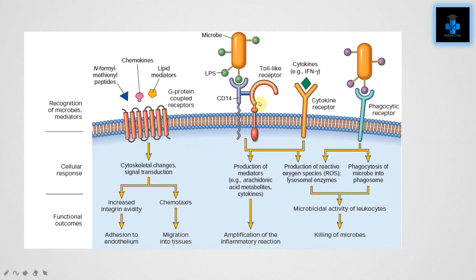The Toll-like receptor recognizes the lipopolysaccharide unit of the microbe. It results in amplification and killing — specifically, they produce mediators such as arachidonic acid metabolites and cytokines, resulting in amplification of the inflammatory reaction. They also produce reactive oxygen species and lysosomal enzymes, which end up killing the microbes. Likewise, the phagocytic receptor produces reactive oxygen species, kills microbes, and performs phagocytosis of the microbe into phagosomes.